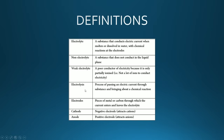In electrolysis you have certain things that you use. An electrolyte is the liquid substance that conducts electrical current when in molten or dissolved in water, with chemical reactions happening at the electrodes. The electrodes are pieces of metal or carbon through which the current enters and leaves the electrolyte. You've got two types: the cathode, which is the negative electrode attracting cations, and the anode, which is the positive electrode which attracts anions.